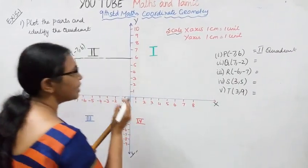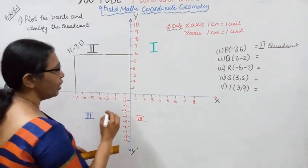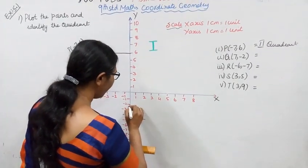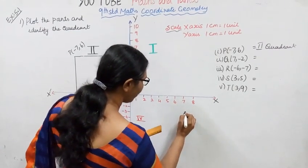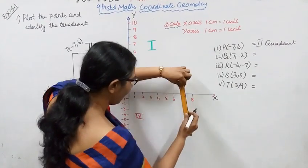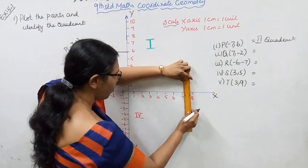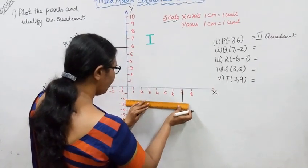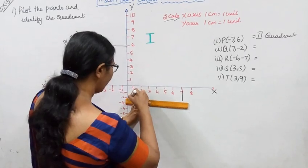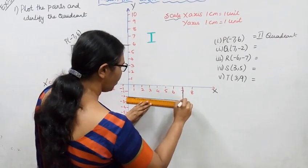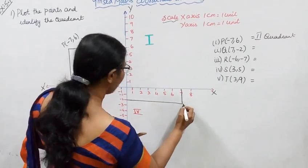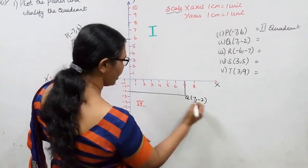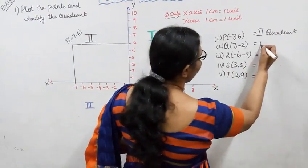Point Q is at (+7, -2). Plus 7 on the X-axis, minus 2 on the Y-axis. Since X is positive and Y is negative, Q is in the fourth quadrant.